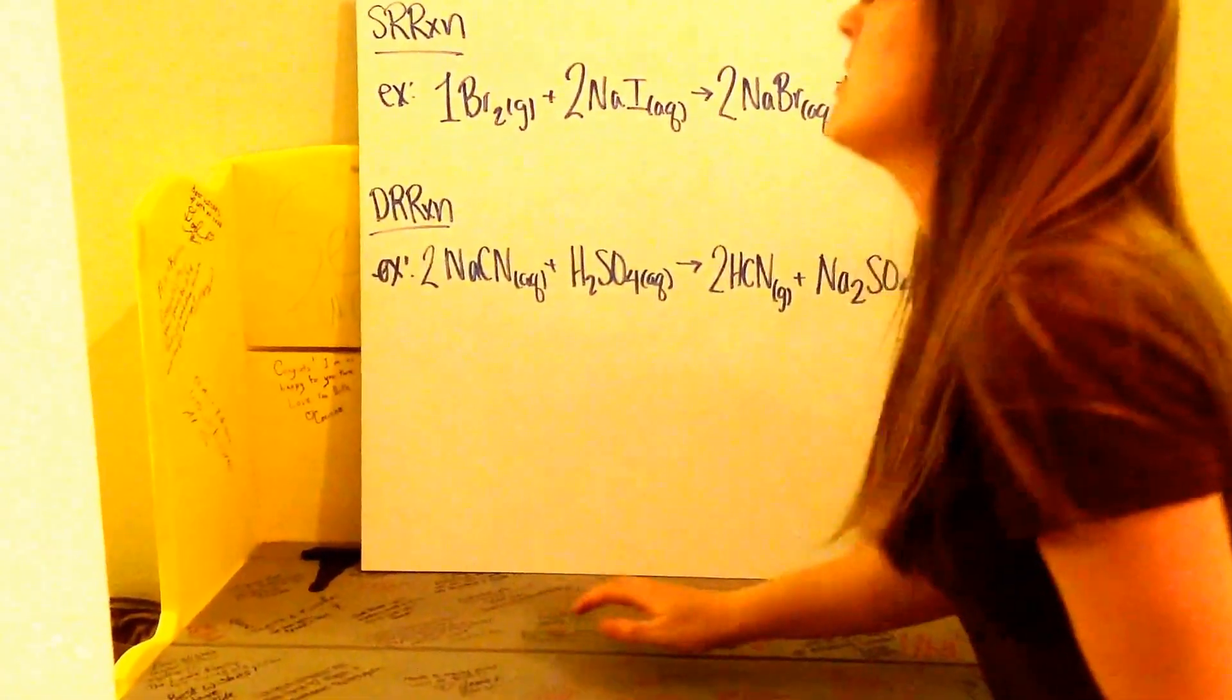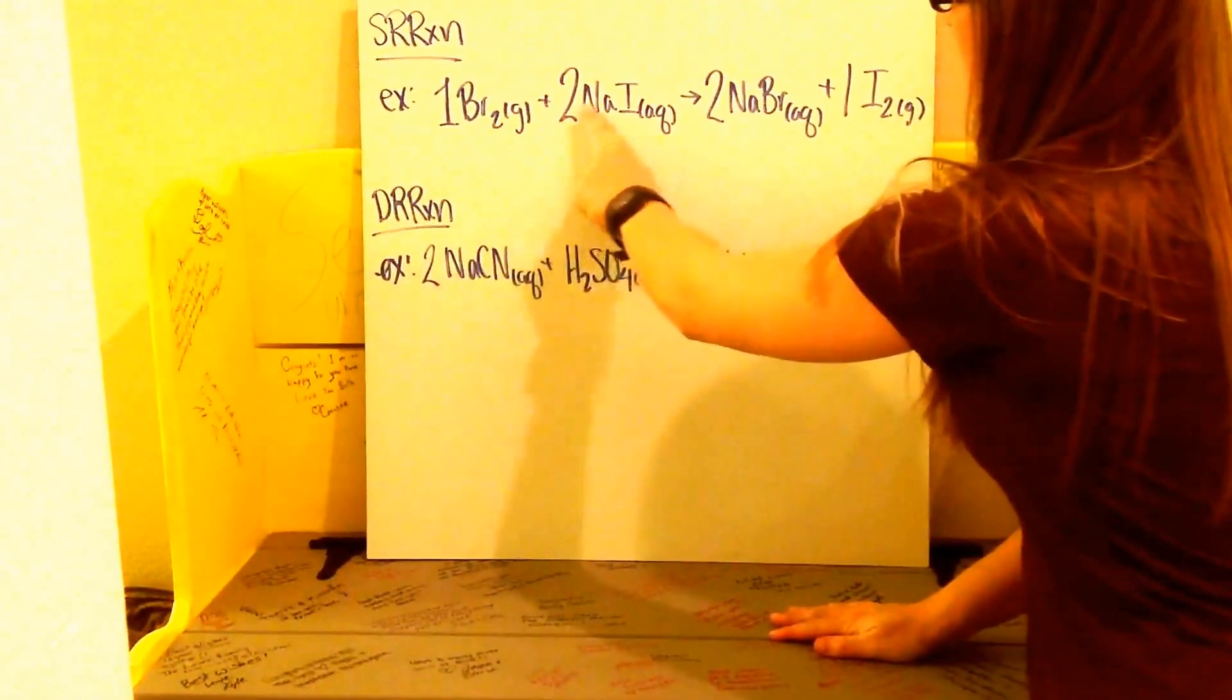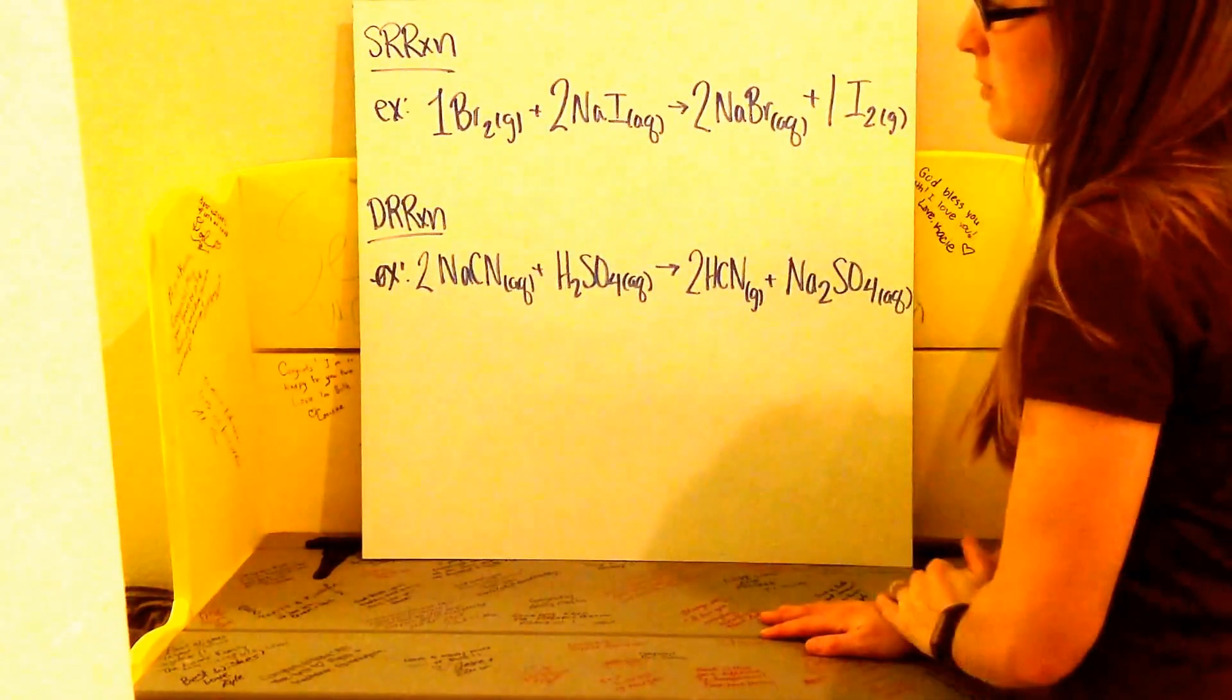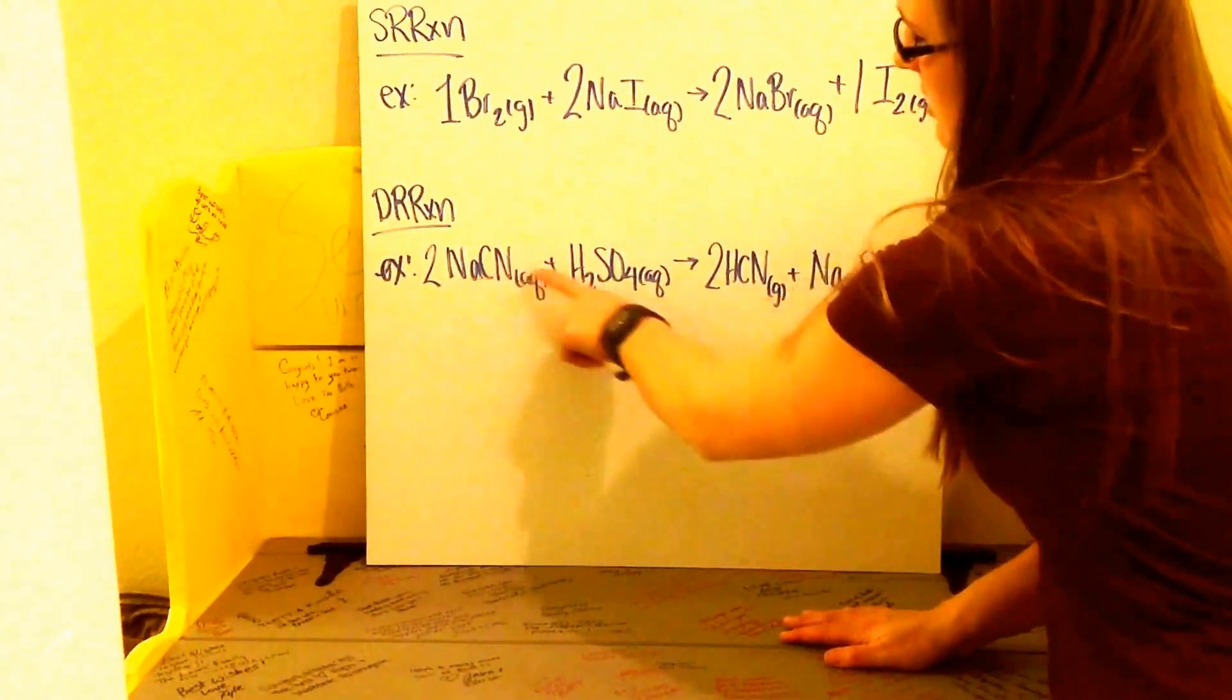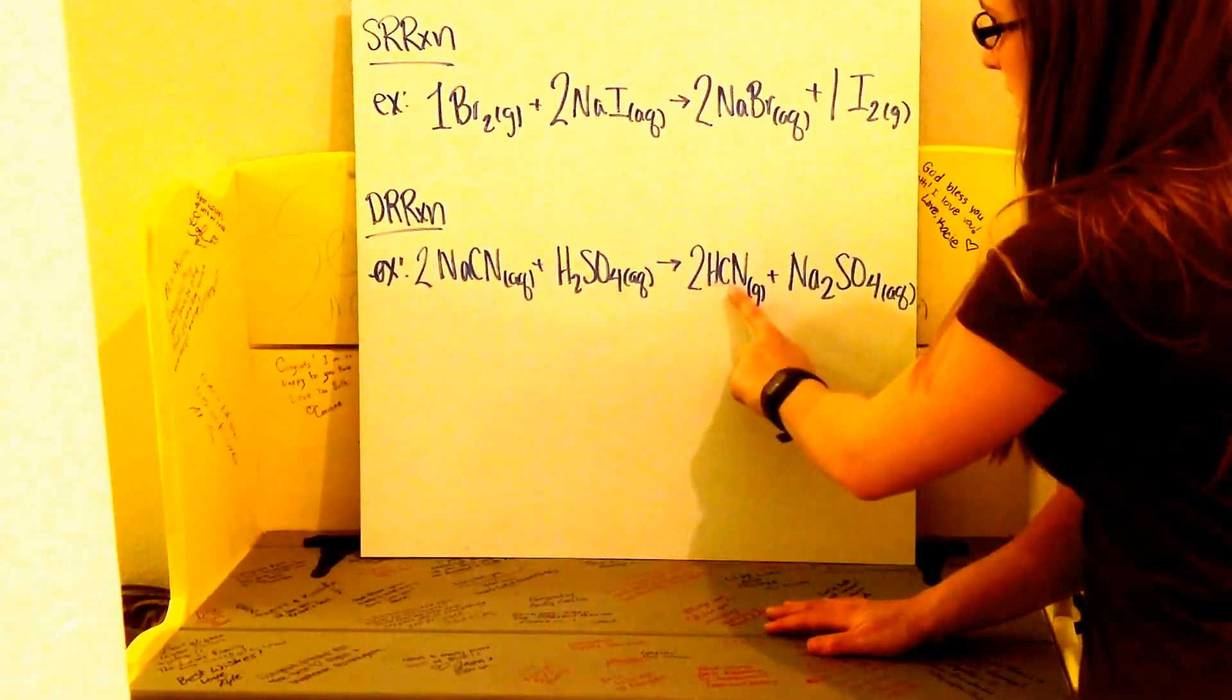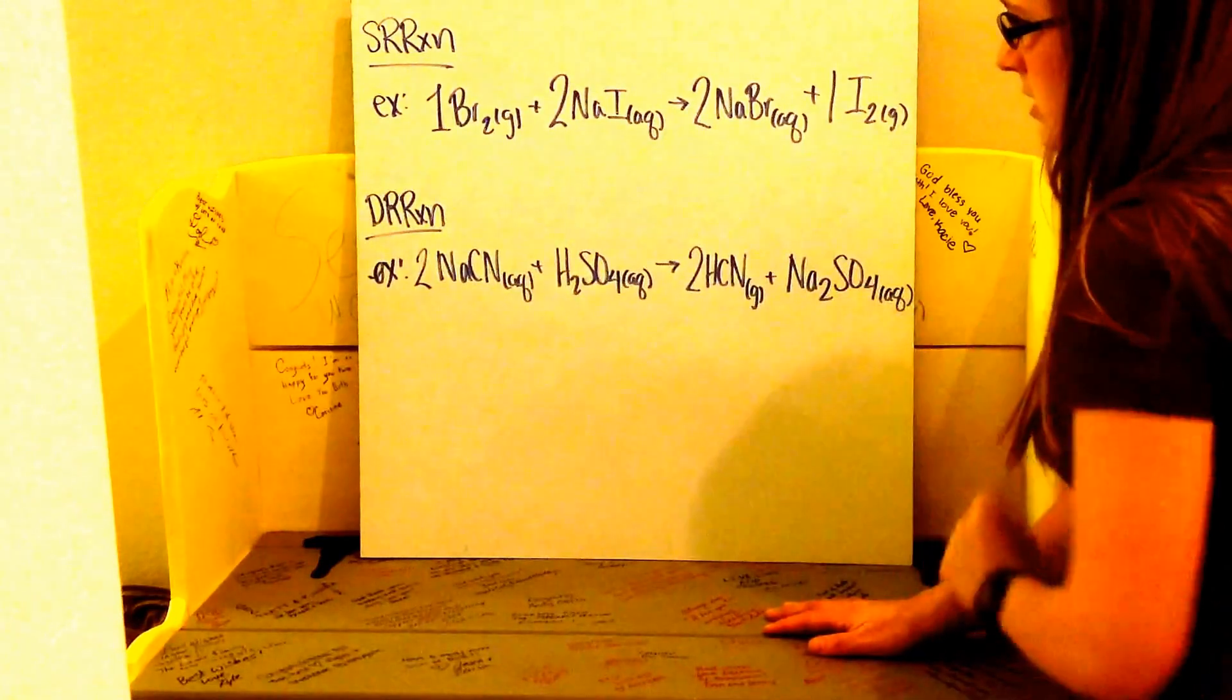For your single replacement reaction, you should have got one bromine plus two sodium iodide yields two sodium bromides plus one iodide. Your double replacement reaction, you should have got two sodium cyanide plus one dihydrogen sulfate yields two hydrogen cyanide plus sodium sulfate.